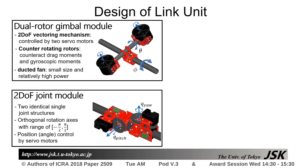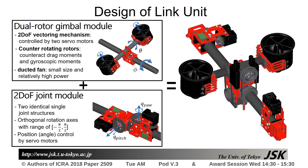As the fundamental component, the dual rotor gimbal module contains counter-rotating rotors, while the two-DOF joint module has two identical single-joint structures. Combining these components, the generalized link unit is achieved.